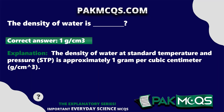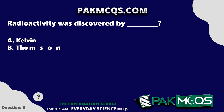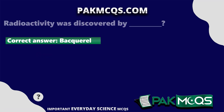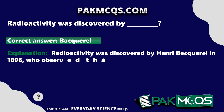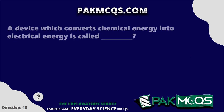Radioactivity was discovered by whom? Becquerel. Radioactivity was discovered by Henri Becquerel in 1896, who observed that certain uranium compounds emitted penetrating radiation.